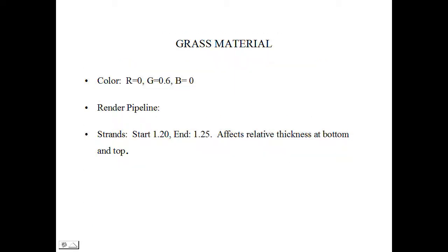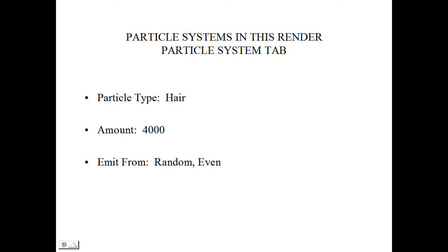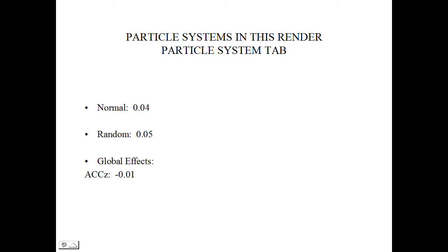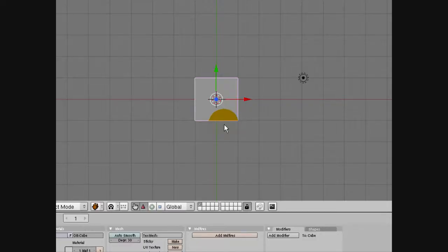Here are the settings I used on my render for grass material. The color is R0, G0.6, B0 — a slightly toned-down green. In the render pipeline there's a strands filter: start at 1.2 and end at 1.25. Strands affects the relative thickness at the bottom and top — you can play with those. I used 4,000 particles, and emit random and even to give it a more realistic feel. For emissions, set the normal at 0.04, the random at 0.05, and for a little bit of angle, set the Z acceleration to negative 0.01. For the ground, set red at 0.594, green at 0.474, and blue at 0.0.